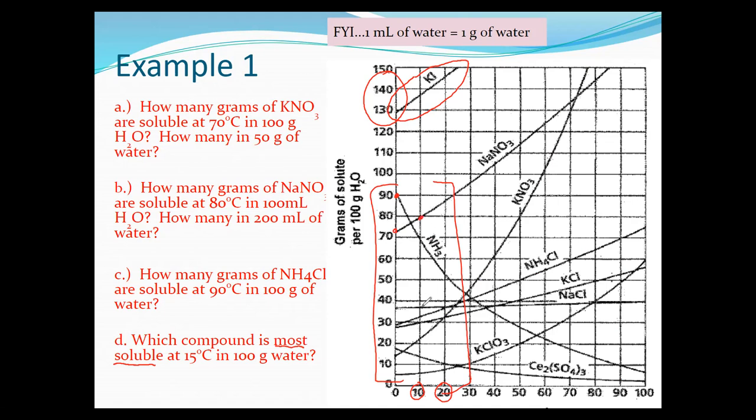So for this question, the answer is potassium iodide — it is the most soluble compound on the graph.